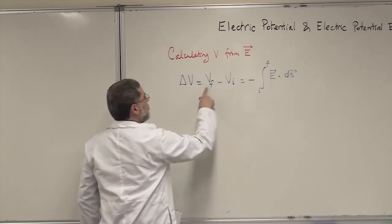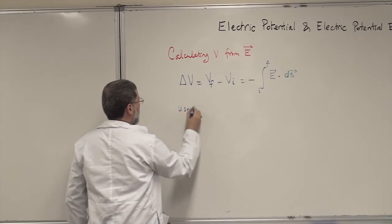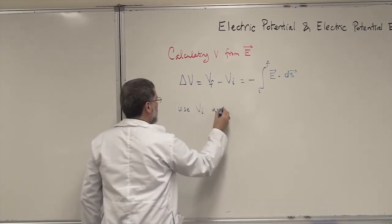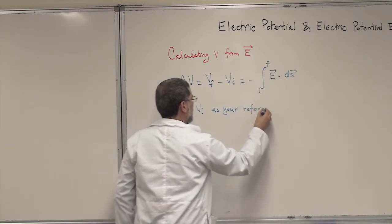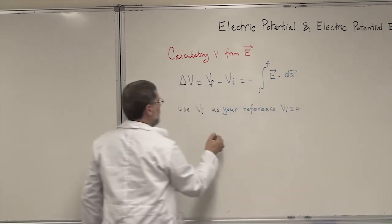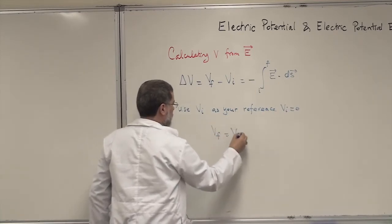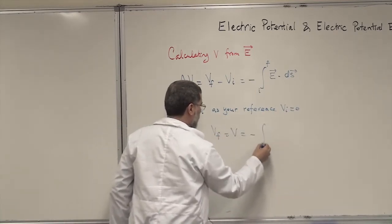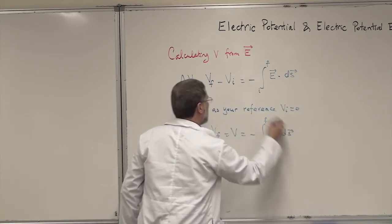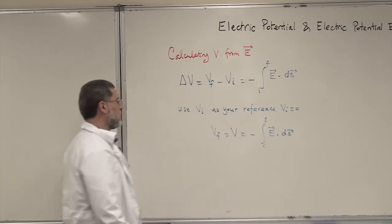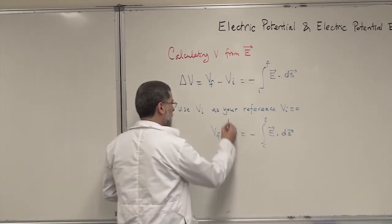You can always use one of the potentials, V initial, as your reference. If you use V initial as your reference and set it to zero — V initial equal to zero — then V final will be V. So V final will be your V, which is equal to minus the integral between I and F of E dot dS. Don't forget that you are using V initial as your reference. That's how you calculate the potential from the electric field.